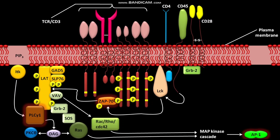Another protein bound to LAT is VAV. VAV induces RAC, Rho, or CDC42. These proteins also induce the MAP kinase cascade, which leads to activation of the transcription factor AP1. The active AP1 then moves toward the nucleus. RAC, Rho, and CDC42 also induce cytoskeletal reorganization.